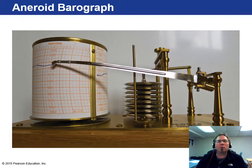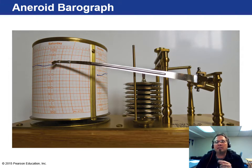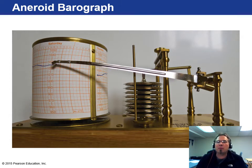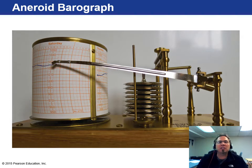Here's an image of an actual barograph. They took an aneroid pressure sensor and attached a drum and an arm to it so you can continuously see variations in air pressure over a given time period — the same concept as a seismograph for earthquakes. This is all done digitally now, but this is how it was done hundreds of years ago. As air pressure changes, you get a record of it over, say, a 24-hour period.